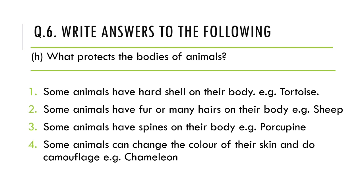The next question is: what protects the bodies of animals? First, some animals have a hard shell on their body — for example, the tortoise. It takes all its organs inside that shell and it acts as a protective shell. Second, some animals have fur or many hairs on their body — mostly animals in cold regions have fur and hairs, for example sheep. Third, some animals have spines on their body — spines are sharp thorns — for example, porcupine.